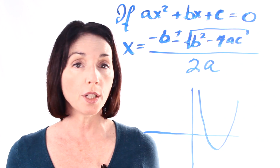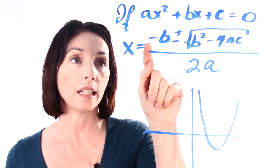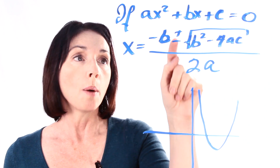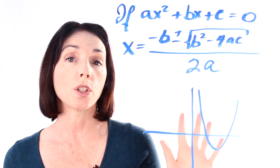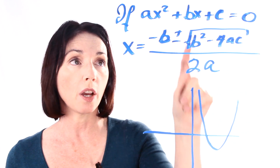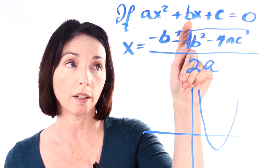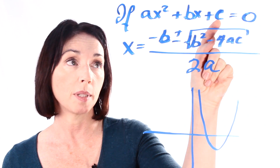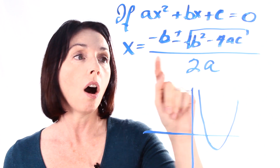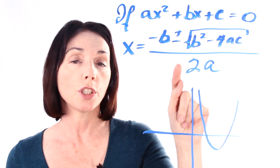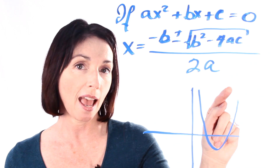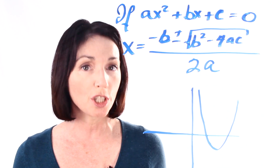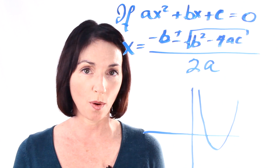The quadratic formula says that x equals the negative, or opposite, of b plus or minus the square root of b squared minus 4 times a times c, all over 2 times a. That will give you the solutions to your quadratic equation.